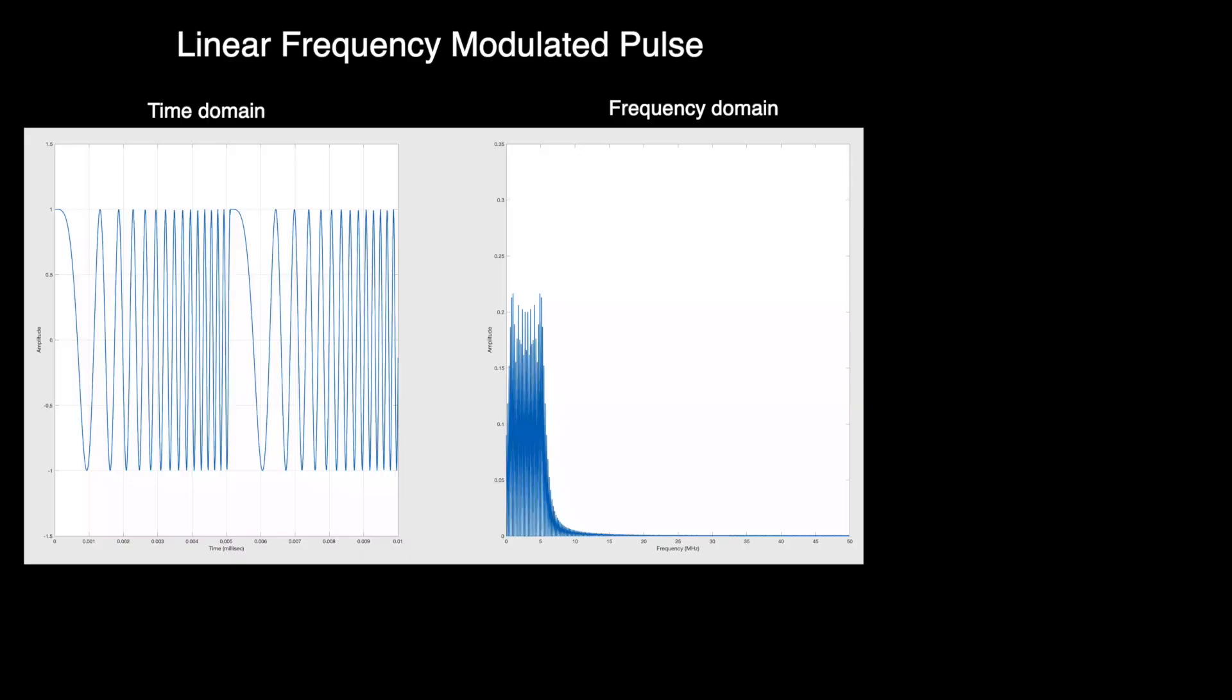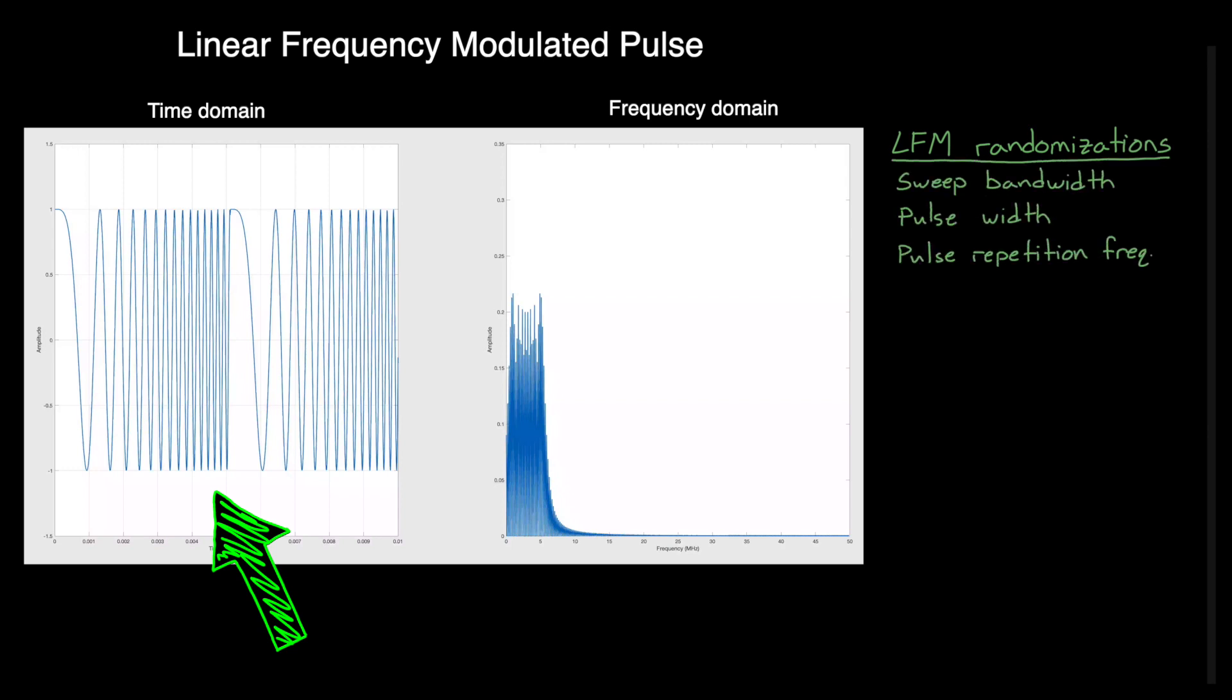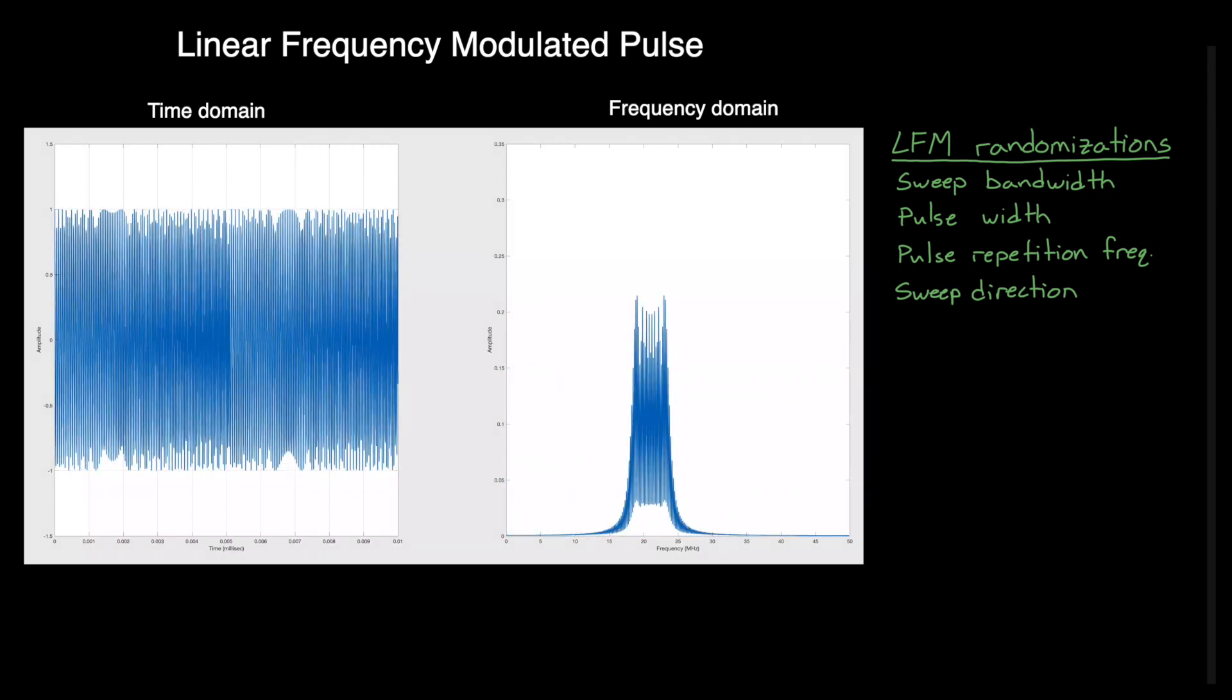To show you an example, the left plot is the time domain signal for a linear frequency modulated pulse, with a random sweep bandwidth, pulse width, pulse repetition frequency, and sweep direction. So the whole thing is randomized. And the right plot is the frequency domain representation of it. The LFM waveform is modulating a carrier signal, which is a higher frequency, also randomized, somewhere around the 20 MHz region. So this is what one version of an ideal LFM waveform looks like.